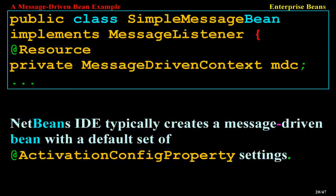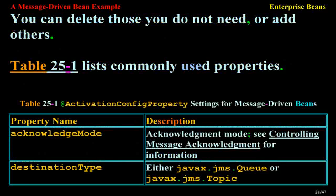NetBeans IDE typically creates a message-driven bean with a default set of ActivationConfigProperty settings. You can delete those you do not need or add others. Table 25-1 lists commonly used properties.